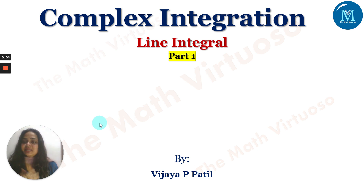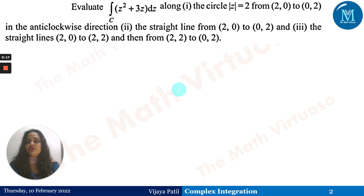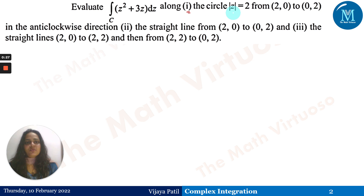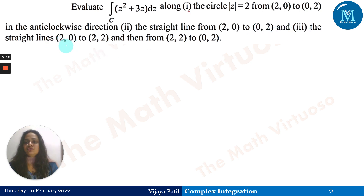Hello and namaste. In continuation with complex integration, after the detailed discussion on line integrals, we'll be going ahead with line integral part one, wherein we are discussing different kinds of questions. Evaluate the integration of z² + 3z dz over the curve C along: first, the circle |z| = 2 from (2,0) to (0,2) in the anticlockwise direction; second, the straight line from (2,0) to (0,2); and third, the straight lines from (2,0) to (2,2) and then from (2,2) to (0,2).